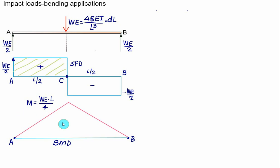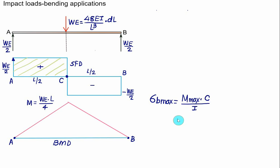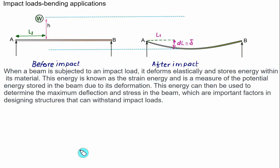Once the maximum bending moment is known, the bending stress is calculated using the flexure formula. Maximum bending stress sigma_b max equals maximum bending moment M_max times c divided by I, where c is the distance from the neutral axis to the outermost fiber — either top or bottom. For a rectangular section, c equals d/2, and for a circular section, c also equals d/2.